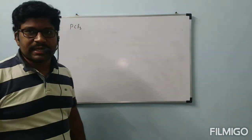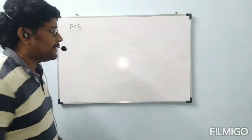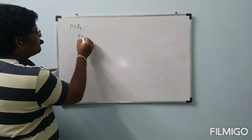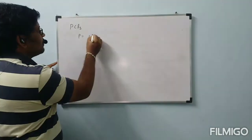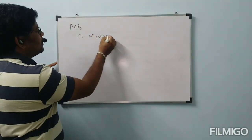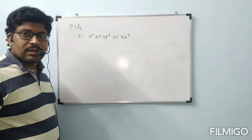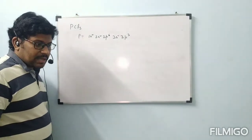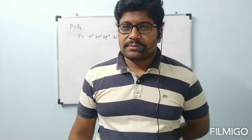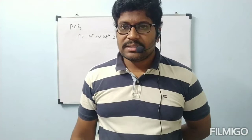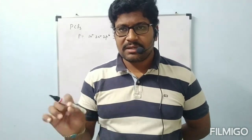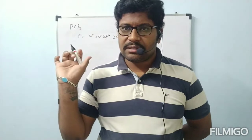Next we look at PCl3, phosphorus trichloride. The central atom is phosphorus, with electronic configuration 1s², 2s², 2p⁶, 3s², 3p³. Looking at answer scripts from Term 1, some students made mistakes in writing electronic configurations. Please review the aufbau principle and remember that Hund's rule applies to same-energy orbitals.